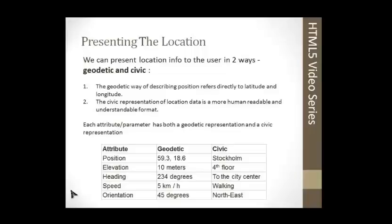We present the location info to the user in two ways. The first is the geolocation way, which describes position directly in terms of latitude and longitude. The second is civic representation, which presents the location data in a more human-readable and understandable format.